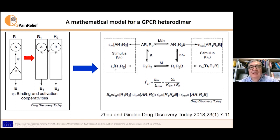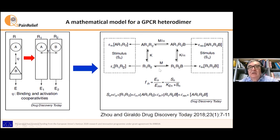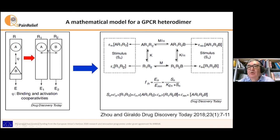N can be one or two — signaling pathway one or signaling pathway two — because in the heterodimer, we can consider an effect coming from one protomer and an effect coming from the other protomer within the heterodimer. So we have a stimulus for all four species: epsilon-N with the concentration of the receptor species, then epsilon-B with the corresponding concentration, epsilon-A, and epsilon-AB for the doubly bound receptor.